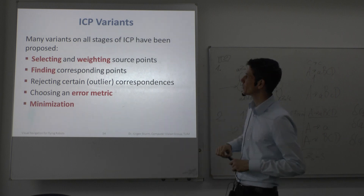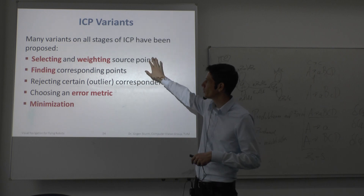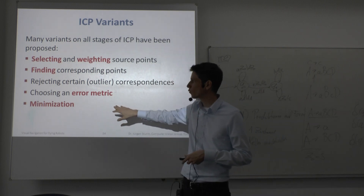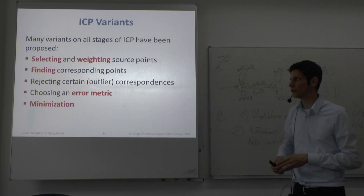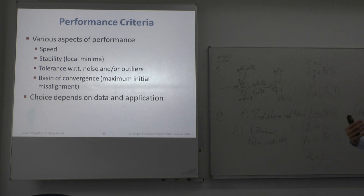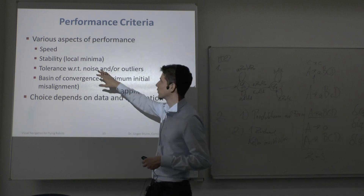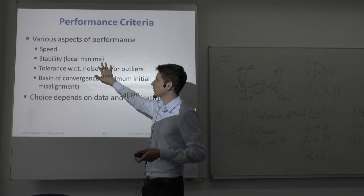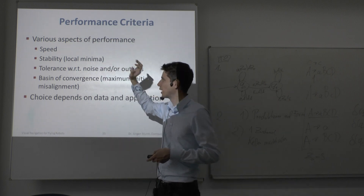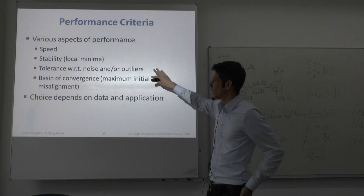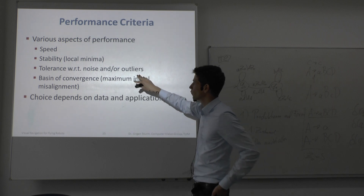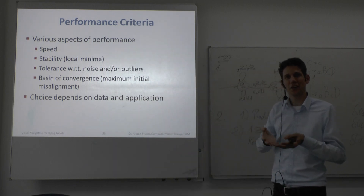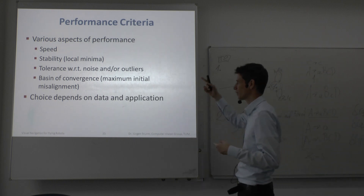There are many parameters to tune in ICP. You can vary how correspondences are found, how source points are selected and weighted, how correspondences are rejected, the choice of error metric, and the minimization method. These choices affect convergence speed, accuracy, stability, noise/outlier tolerance, and the basin of convergence — how smooth or noisy the energy function looks depending on your choices.